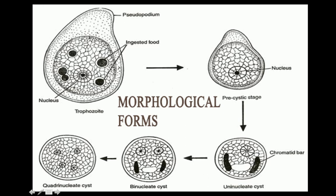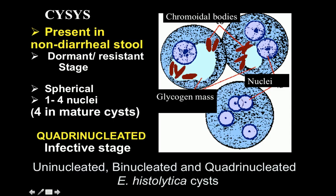Regarding its morphological forms, two forms are seen: trophozoites and cystic forms. The cystic forms when freshly passed are uninucleated bodies, but later the nucleus divides into two and then into four nuclei. This tetranucleated or quadrinucleated cyst is the infective stage of this parasite — this is one of your MCQs. Besides this, you see a glycogen mass and chromatoid bars, which are used up as nutrients by the cyst as it divides by binary fission.